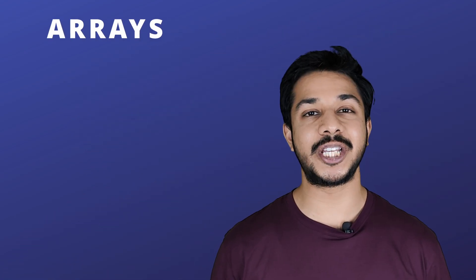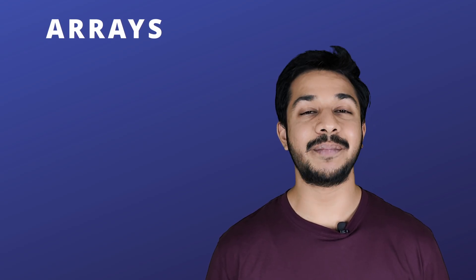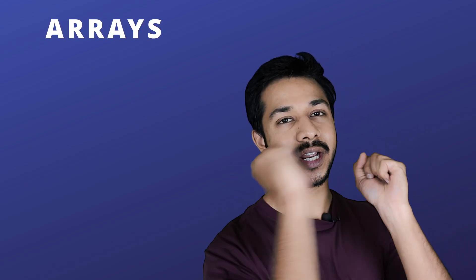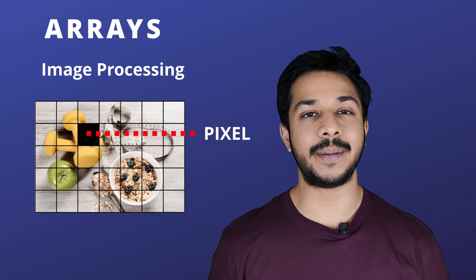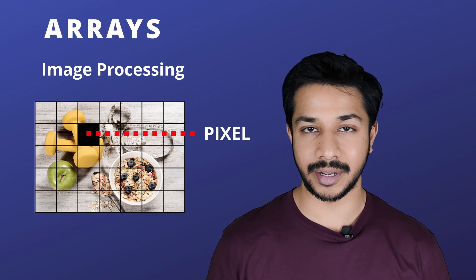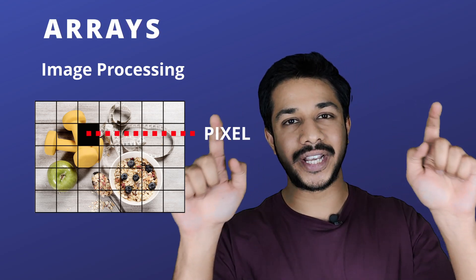Number three: image processing. You must have heard about this term. Image processing is performing some operation on an image to get information out of it. In this, the image processing system treats all images as a 2D array of pixels.